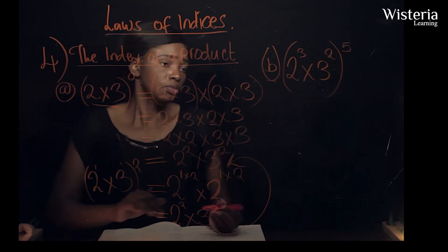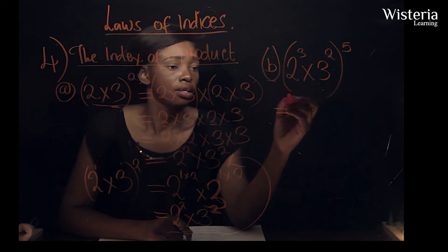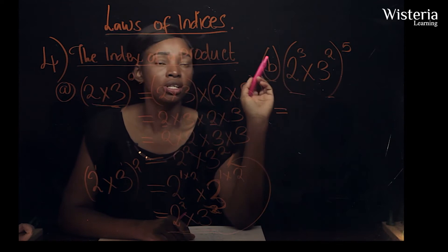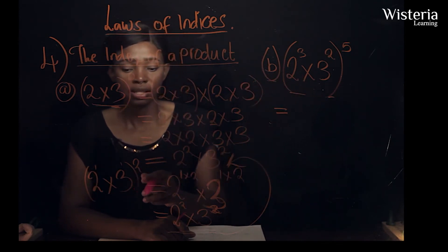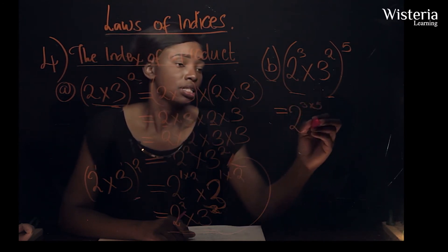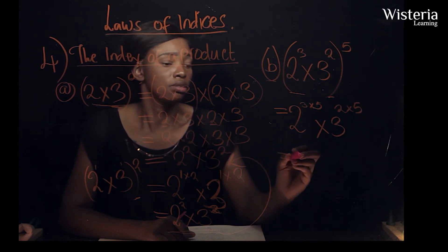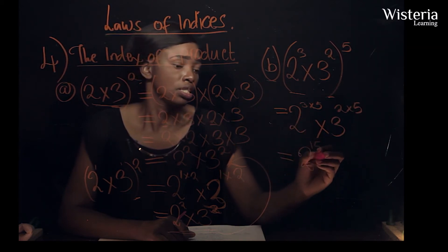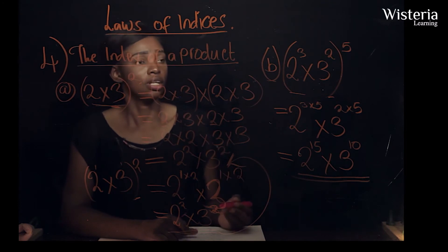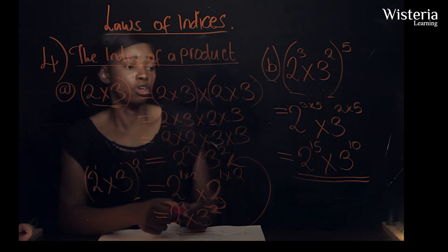In this case we do the same thing — we would multiply everything five times, but that would be too long. So we just use this law: two to the power three times five, times three to the power two times five, which gives us two to the power fifteen times three to the power ten.